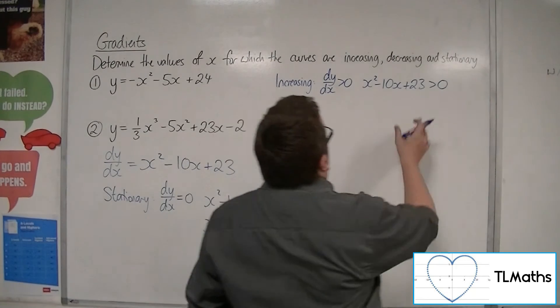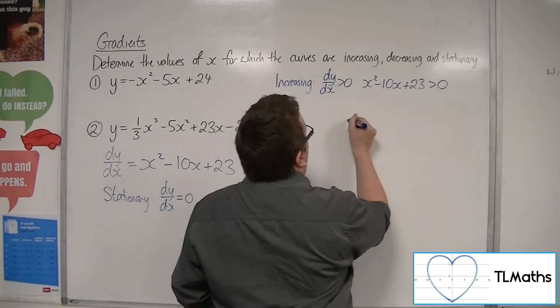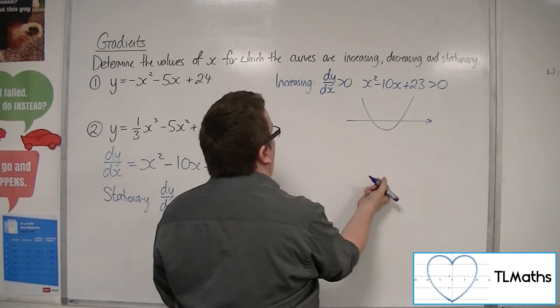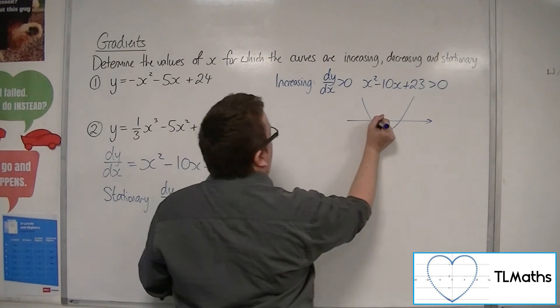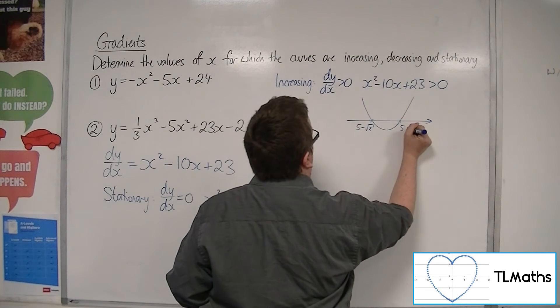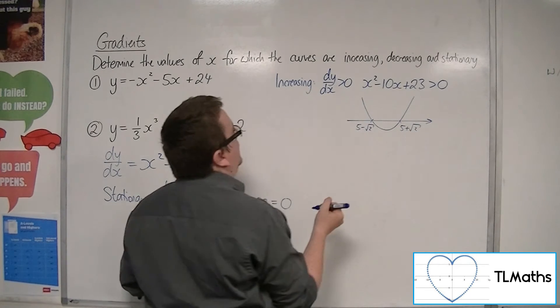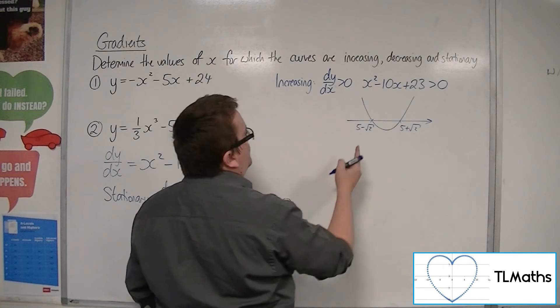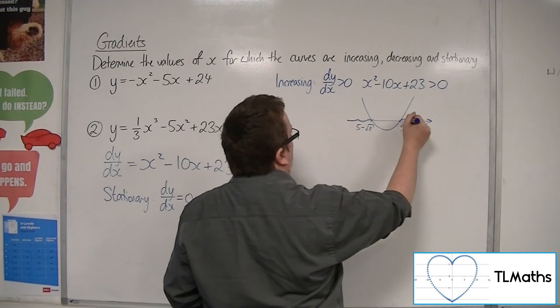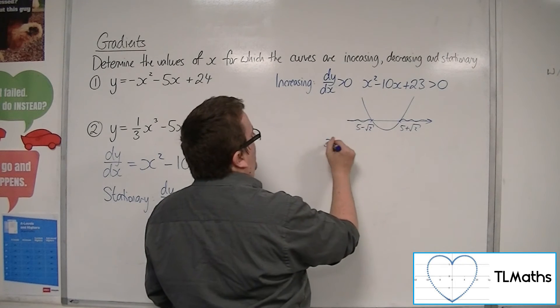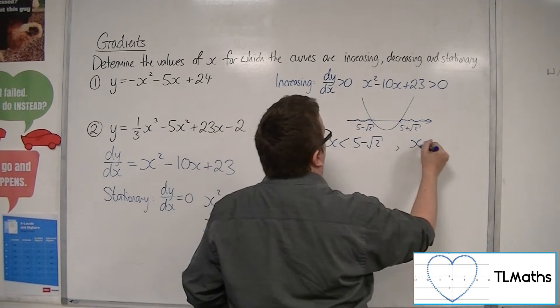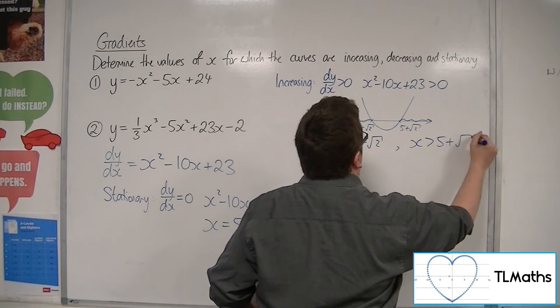So, to solve that, I'd be looking at where this parabola is above the x-axis. So, we'd have 5 minus root 2 here, 5 plus root 2 here. So, it's increasing when we're above the x-axis. So, in this region and that region. So, x is less than 5 minus root 2. And, x is greater than 5 plus root 2.